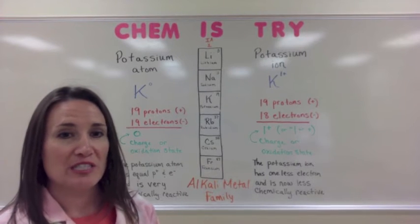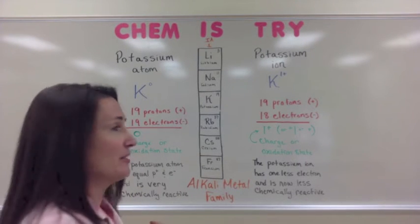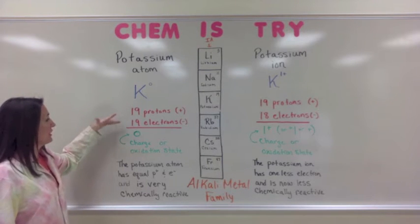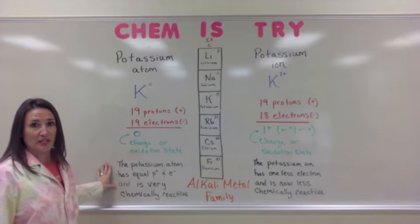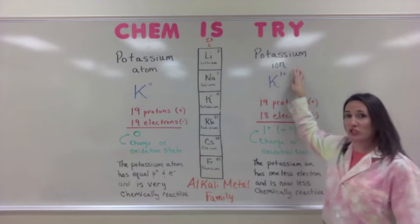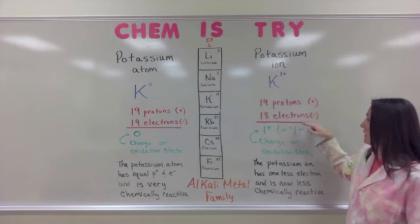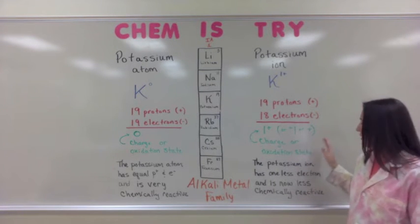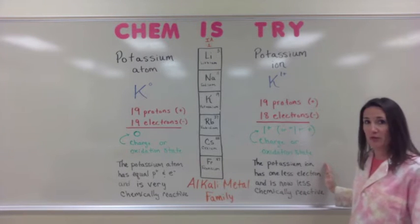In a previous video called Atomic Quantities, I focused on the element potassium. Potassium atoms have 19 protons, 19 electrons, and a zero charge or oxidation state, but they're very chemically reactive. The potassium ion, which is what's found in those foods I discussed, has 19 protons and 18 electrons and a 1+ overall charge or oxidation state. That version of potassium as an ion is stable.